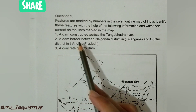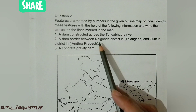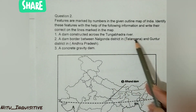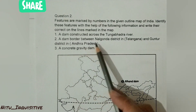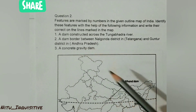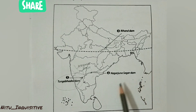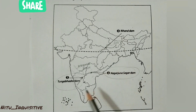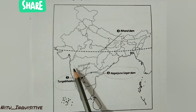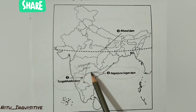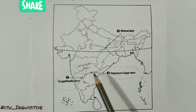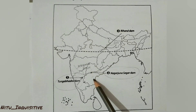The next question is: a dam on the border between Nalgonda district in Telangana and Guntur district in Andhra Pradesh. This is Nagarjuna Sagar Dam, which is on the Krishna River. Its location is at the border between Telangana and Andhra Pradesh.